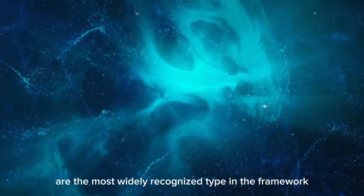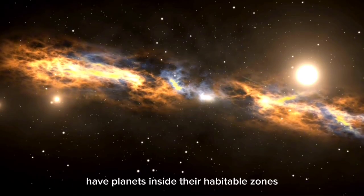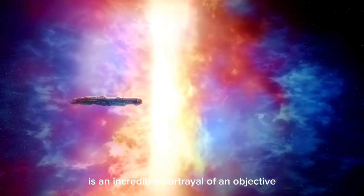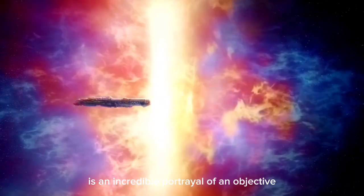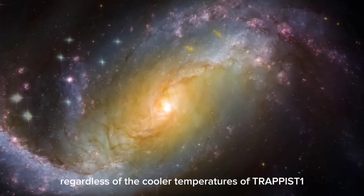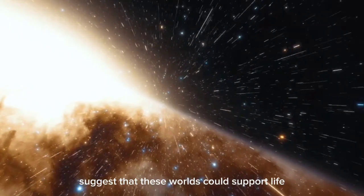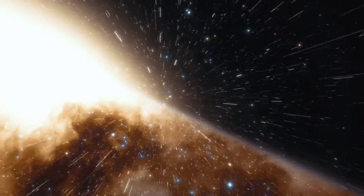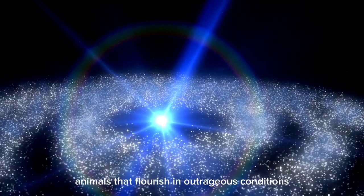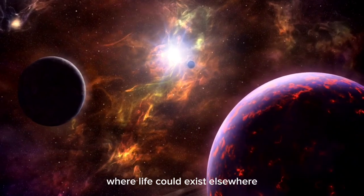The TRAPPIST-1 framework, with its seven Earth-sized planets, is an incredible portrayal of an objective for such assessments. Regardless of the cooler temperatures of TRAPPIST-1, its planet's vicinity to the star and the presence of water vapor suggest that these worlds could support life. The examination of extremophiles on Earth, animals that flourish in outrageous conditions, gives critical insights into the kinds of conditions where life could exist elsewhere.